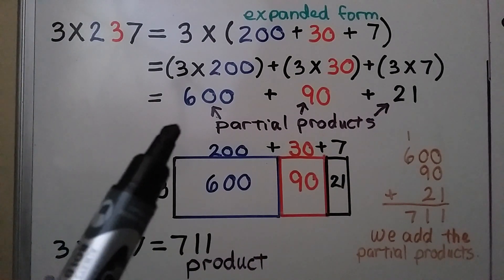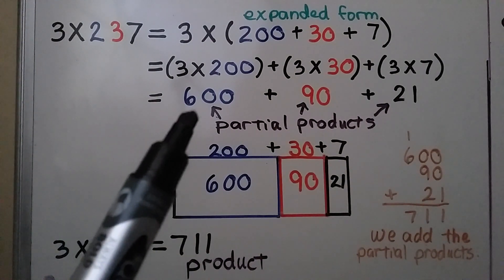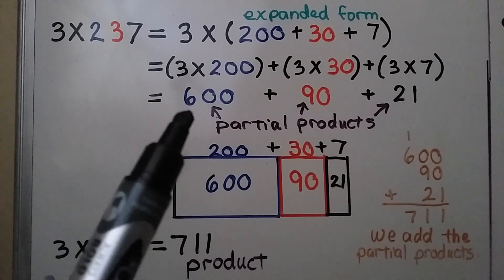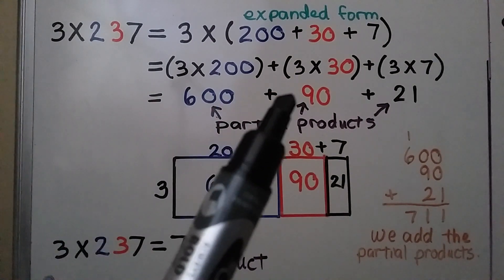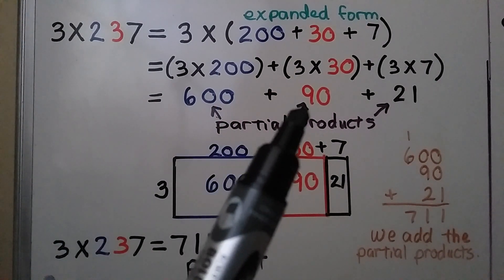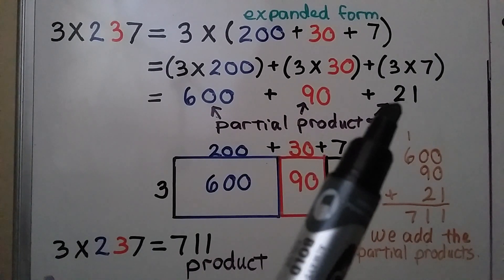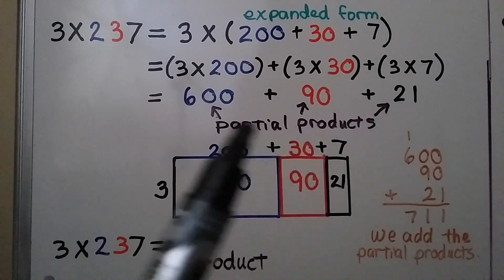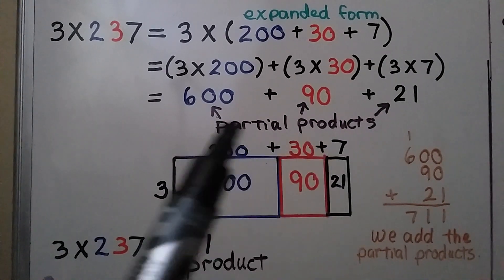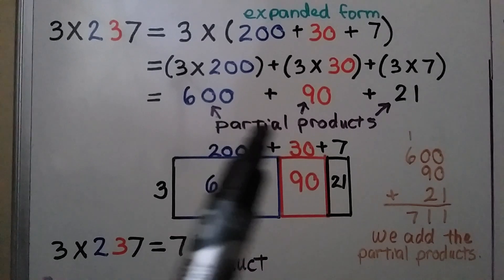3 times 200 is equal to 600. 3 times 30 is equal to 90. 3 times 7 is equal to 21. These are our partial products.